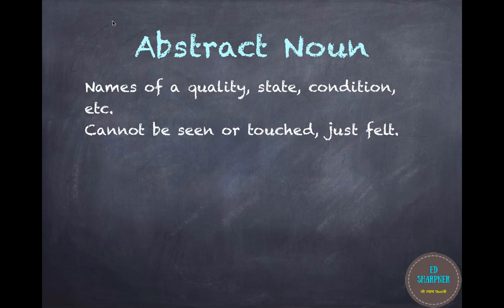The next one is an abstract noun. The word abstract itself means something which does not have a physical or concrete existence — something that exists as an idea, a quality, a state, a condition, etc. This type of noun cannot be seen or touched; they can only be felt.